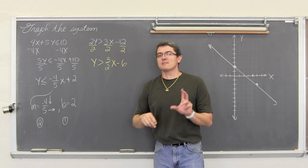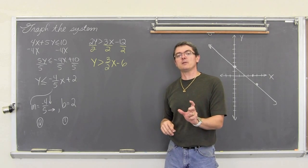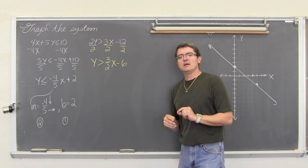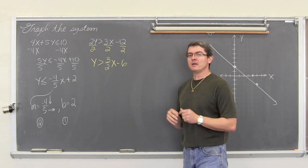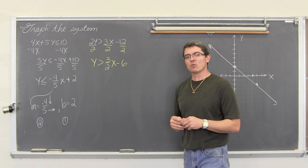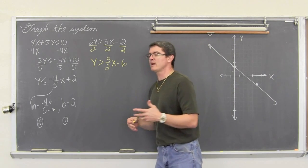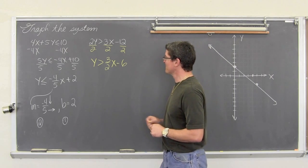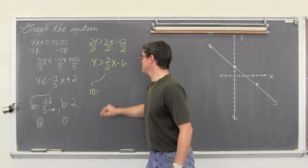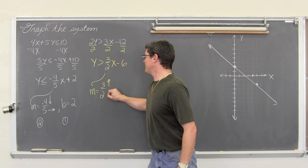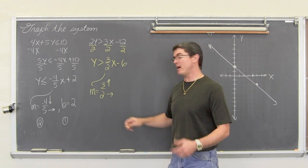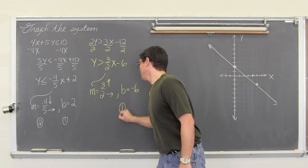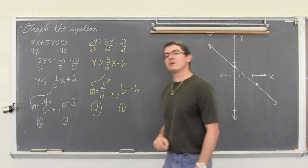With both of these examples I am not switching the direction of the inequality because I am not multiplying or dividing both sides by a negative number. That is really the only time working with an inequality is drastically different than working with an equation. So we have a slope equal to 3/2, meaning we go up 3 and over 2 from our y-intercept of negative 6. We do y-intercept first and slope second from the y-intercept.